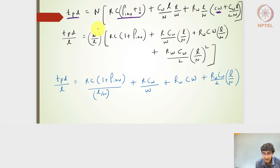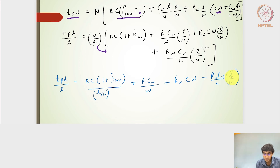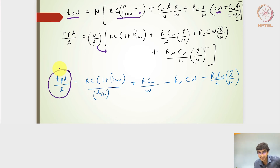Dividing the total delay by l gives the delay per unit length tpd/l. Rearranging, n/l moves to the denominator as l/n. The term r·cw·(l/n) cancels and gives r·cw/w; similarly rw·cw·(l/n) cancels to give rw·cw/2·(l/n). The delay per unit length is thus expressed in terms of w and l/n.